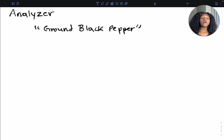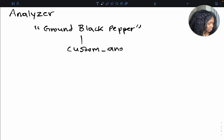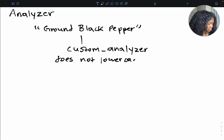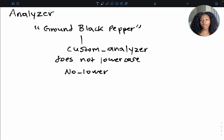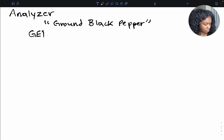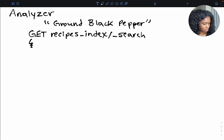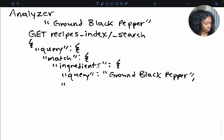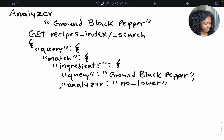Let's say the standard analyzer automatically lowercases all your search terms and I didn't want that to happen. So let's say I created a custom analyzer that does not lowercase — let's call it 'no_lower'. To implement this within a query, there's a way to define this analyzer within the mapping, but for how we implement it in the query itself: we use the analyzer parameter set to our custom analyzer name 'no_lower'.